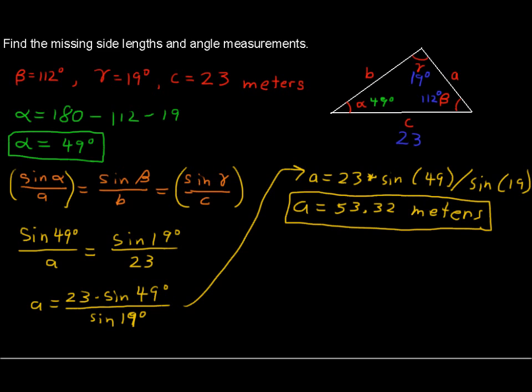And lastly, we've got to find side length B. So let's use sine of beta over B equals sine of gamma over C. And so you've got sine of the beta is 112 degrees over the B is the unknown, equals sine of 19 degrees over the 23. This will look very similar to what we did for A.